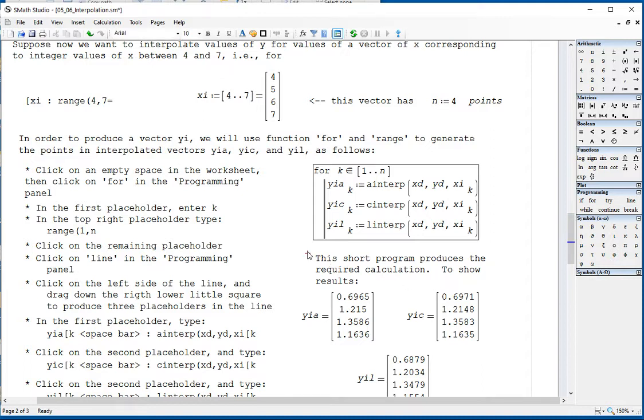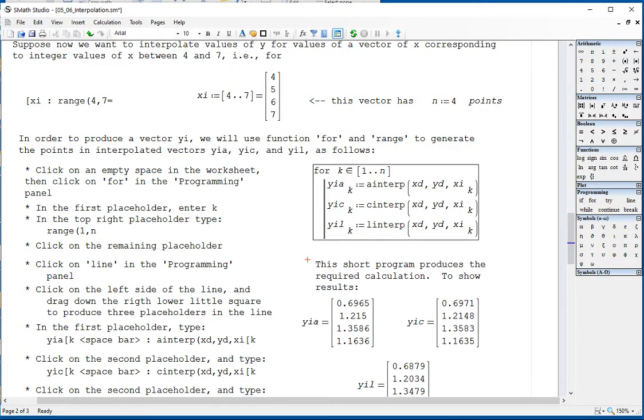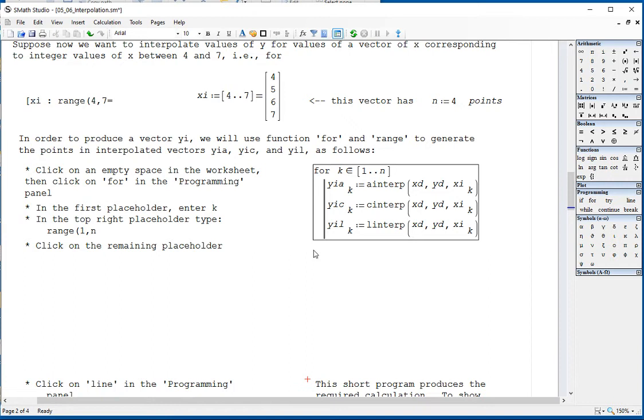I'm going to type it right here for you. Temporarily, I'm going to open this area. You simply go and click somewhere in the worksheet and then find your for function in the programming panel. And then in here, we type k, which is the index. And then n, as I obtain here, is the number of points I define as n equals 4.